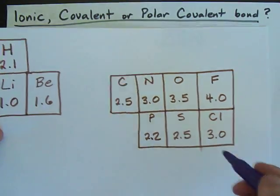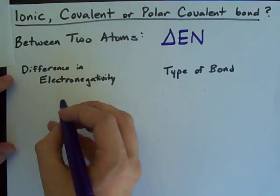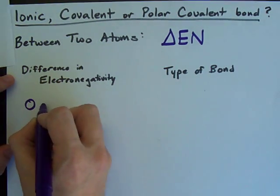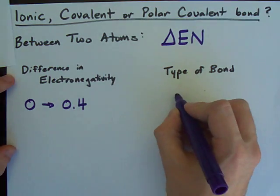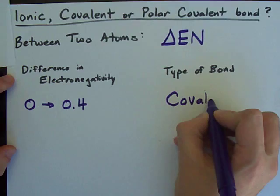Now if that difference is 0 up to 0.4, then we generally say it's a covalent bond.